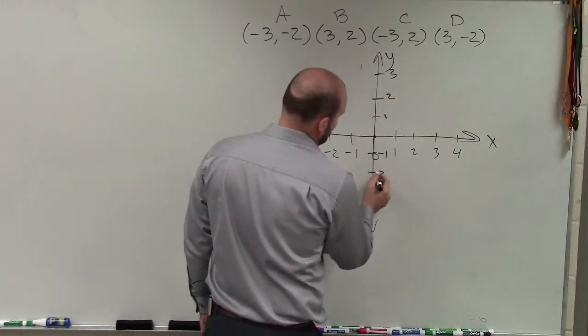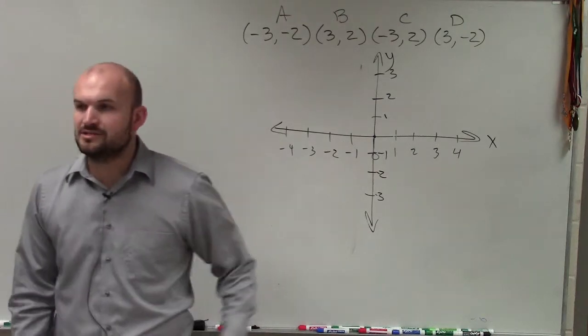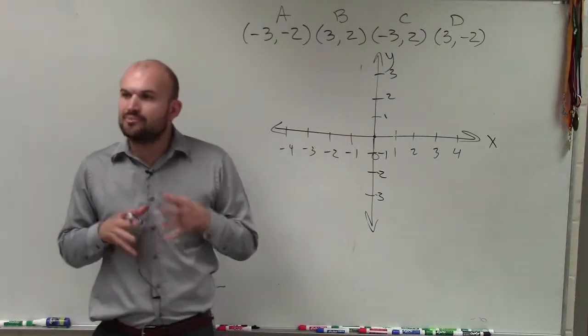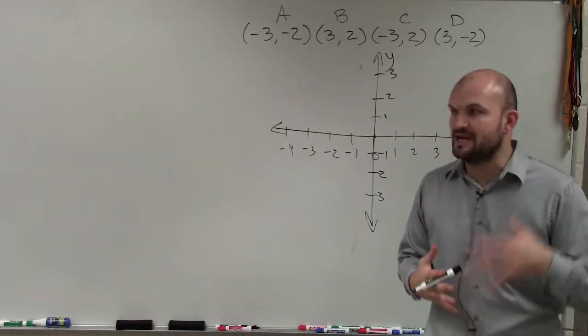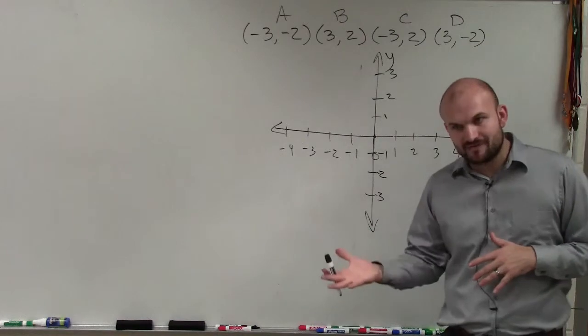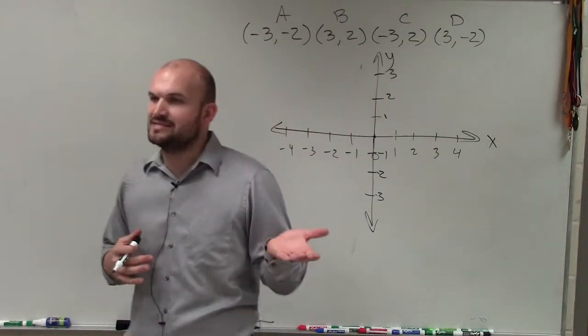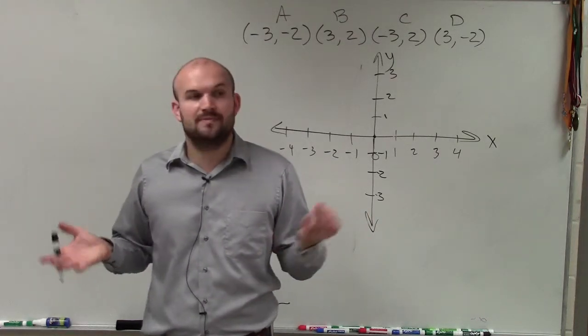So when you guys are thinking about plotting points, all we're basically doing is we just have two number lines, a horizontal and a vertical number line. Now, when plotting a Cartesian coordinate, we need to understand that Cartesian coordinates have an x value and a y value. The x value represents the distance, or the placement, on the x-axis. And the y-value represents the placement on the y-axis.